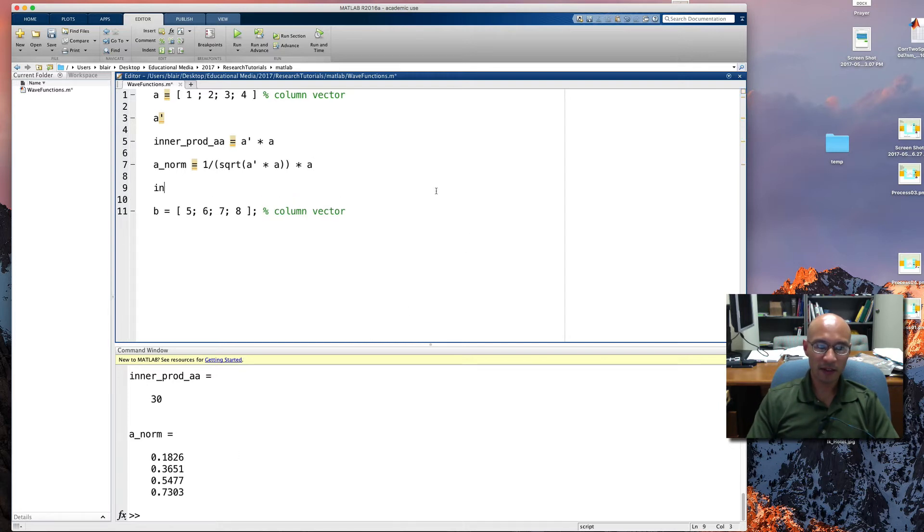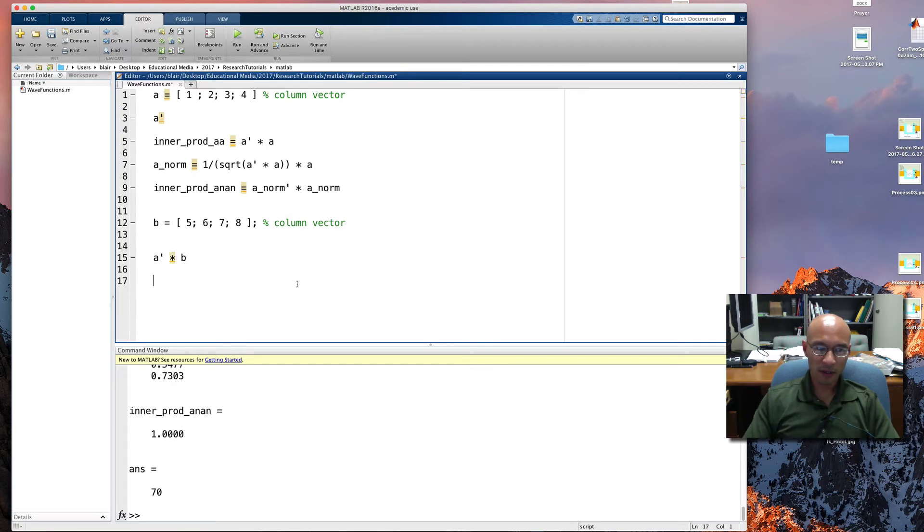And to check it, let's see what happens when we take inner prod A norm and A norm. I'm going to run that. And you see that it evaluates to 1, so it's normalized just like we want. And just as a demonstration, here is the inner product of A and B. Notice it's a scalar. Let's also use the I function. See what happens when I do that. So it gets me an identity of dimension 4.